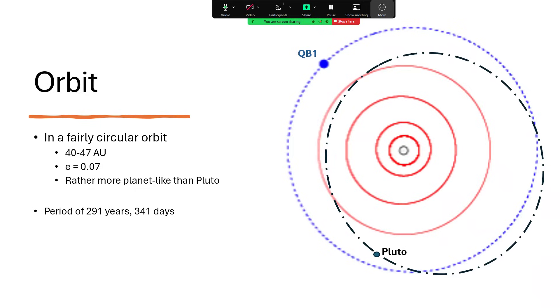So Pluto's definitely in an orbit-crossing path, whereas QB1 is in a much more circular path with a very low eccentricity. The e factor of the elliptical nature of the orbit is only 0.07. That's really a much more planet-like orbit, and to discover an object out there in what looks like a planet-like orbit of 291 years and 341 days was quite a revelation.